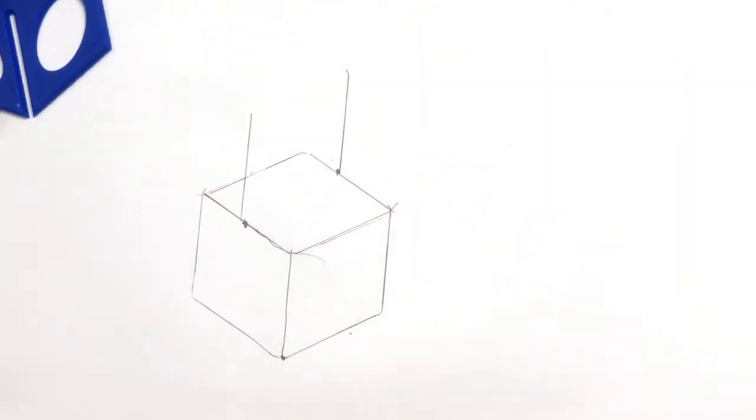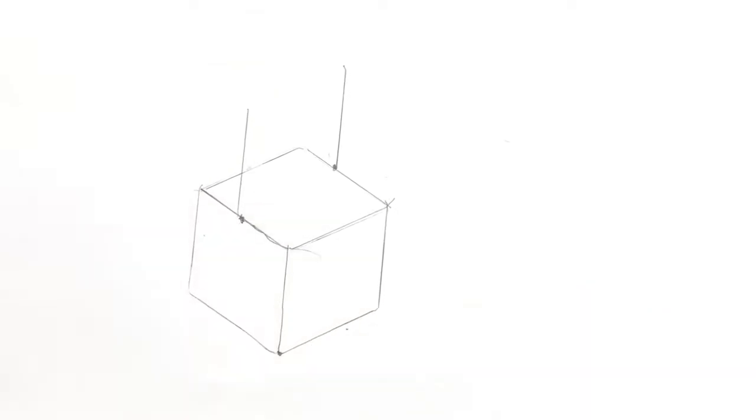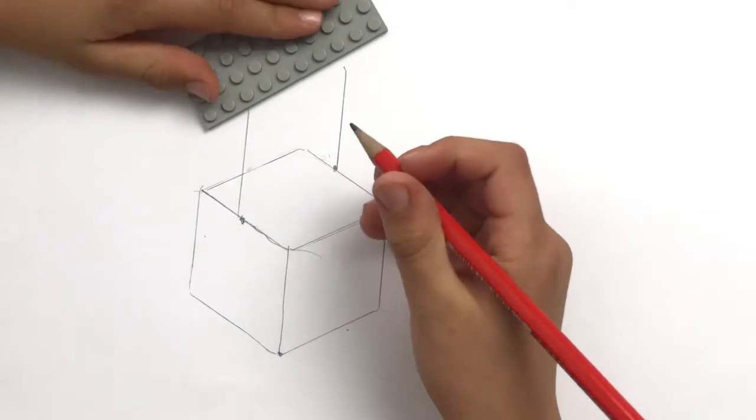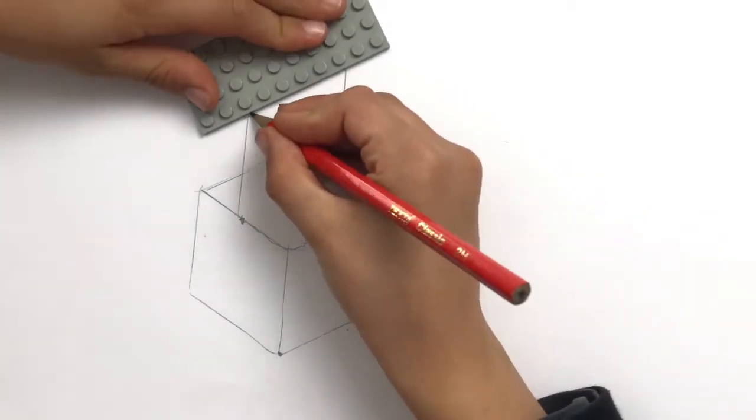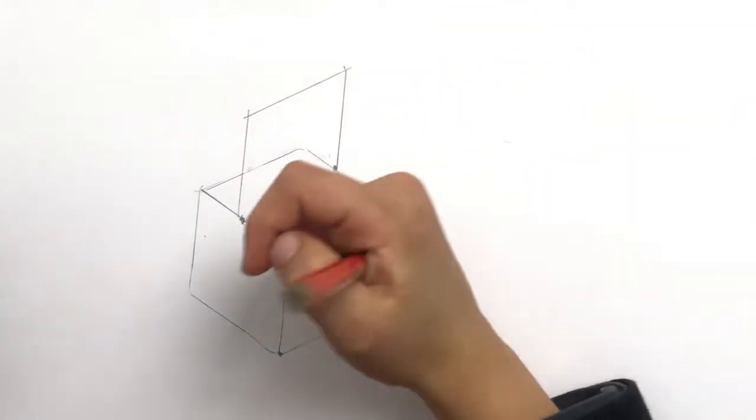Tall lines will mean a tall roof. Shorter lines will be a shorter roof. The next thing he's going to do is to join them together with something straight like a piece of Lego or a rule.